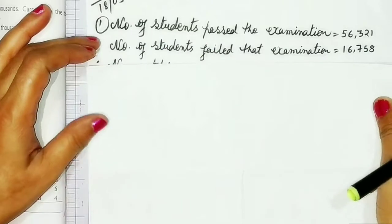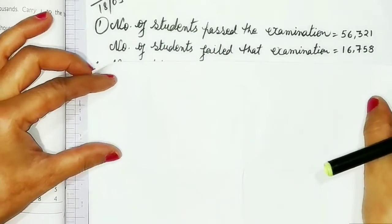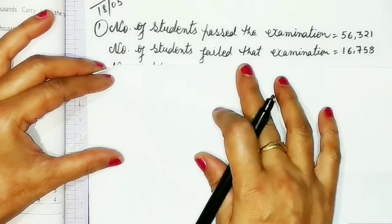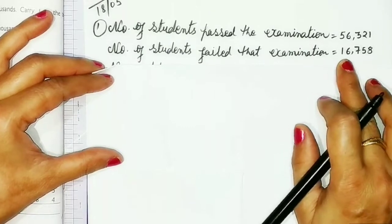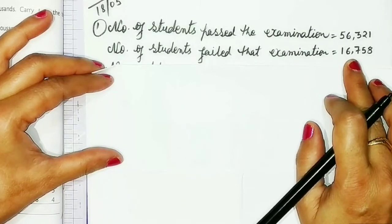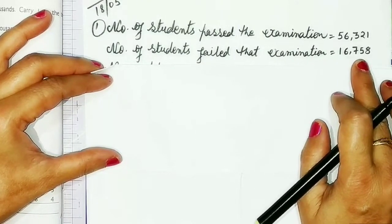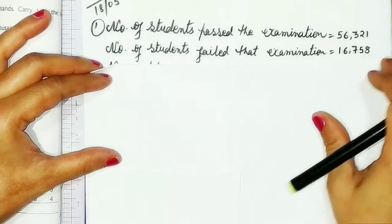The second statement will be: the number of students who failed the examination is equal to 16,758.